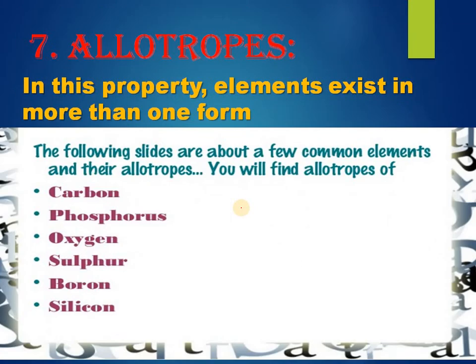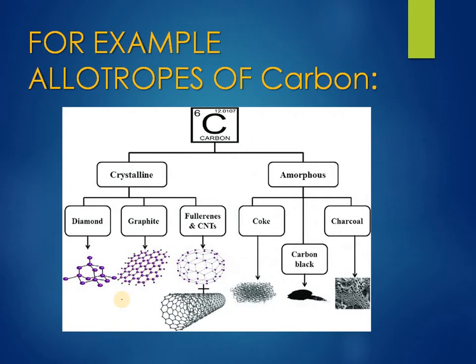Allotropy is the property of an element to exist in more than one physical form. Elements showing allotropy include carbon, phosphorus, oxygen, sulfur, boron, and silicon. Carbon exists in crystalline and amorphous forms. Crystalline carbon has three types: diamond, graphite, and fullerenes — optical fibers are formed from these. Amorphous carbon includes coke, carbon black, and charcoal.